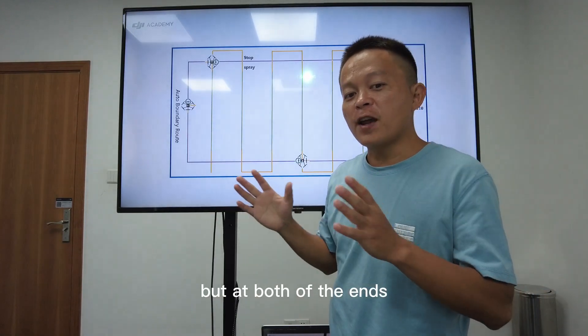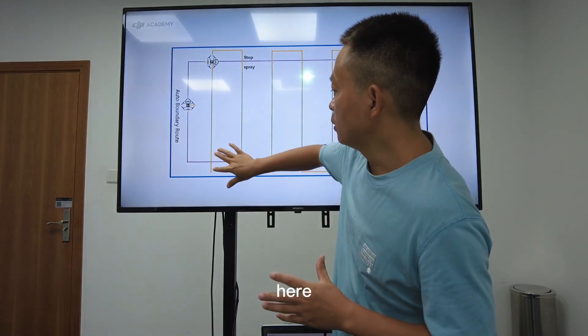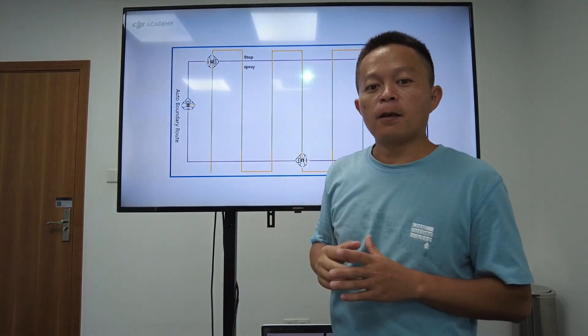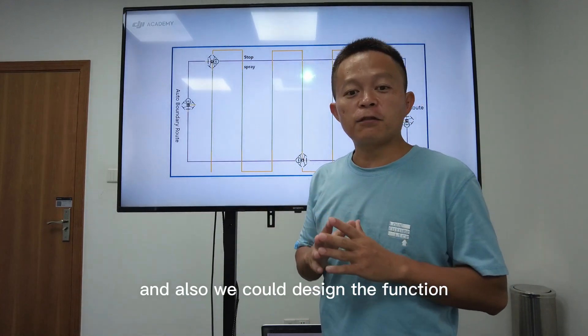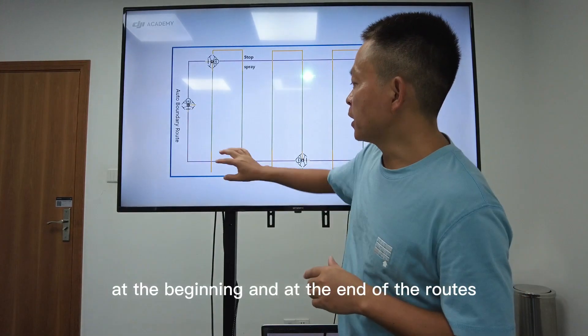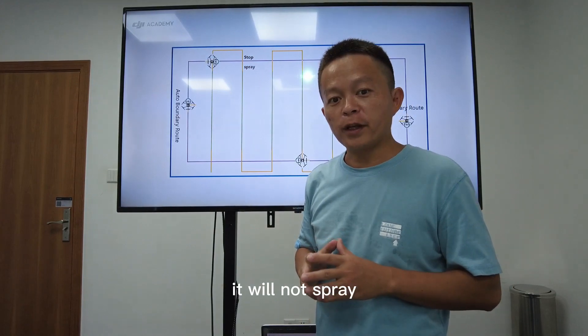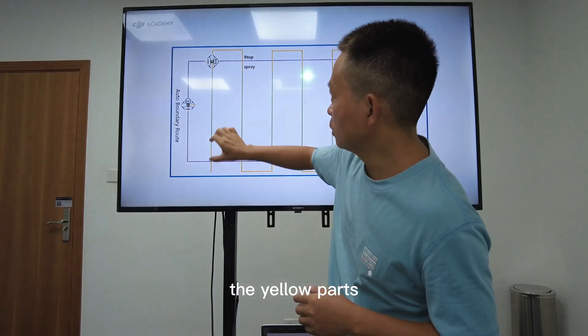But at both of the ends, here, the speeds are different. And also we could design the function at the beginning and at the end of the routes to not spray. The yellow part.